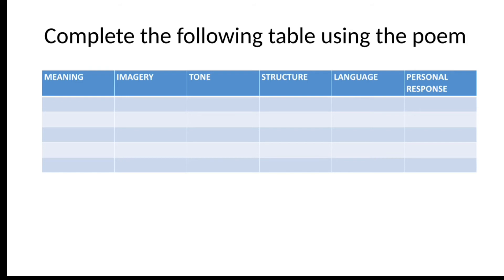What I would like you to do is go back to the poem, annotate it for meaning, imagery, tone, structure, and language, and then give your personal response. After you've annotated the poem, please come back to this table and put in your meaning for each. A poem can have more than one meaning, so you'd fill that in the table, then give me the imagery that links — and the imagery can be evidence from the poem. Complete your table and then come back to the video. Pause it while you're doing this.